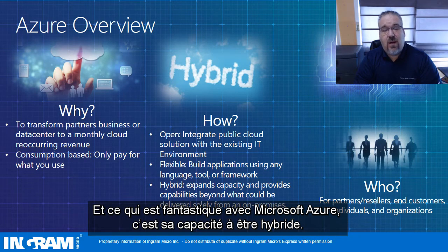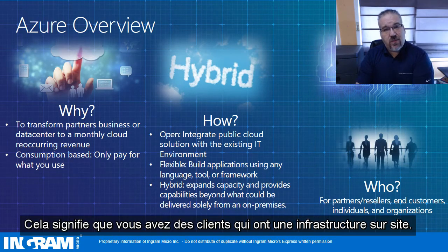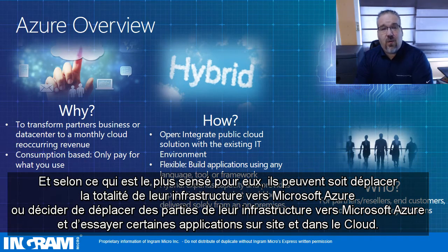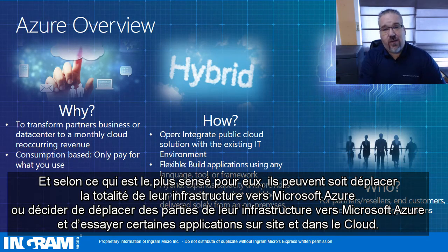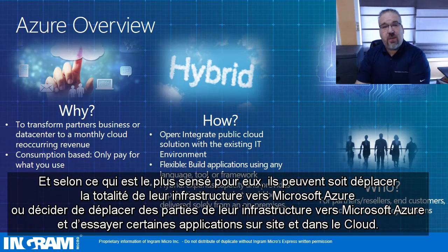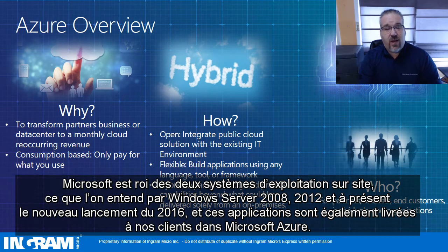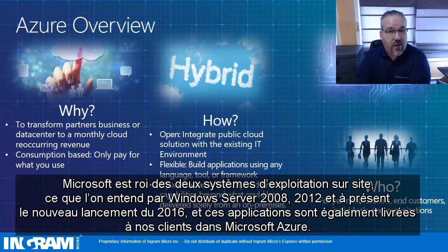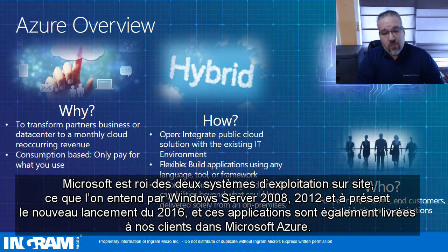The fantastic thing about Microsoft Azure is its ability to be hybrid. What that means is you have customers that have on-premises infrastructure and, depending on what makes most sense to them, they can either move their entire infrastructure into Microsoft Azure, or they can decide to move pieces of their infrastructure into Azure and have applications that are both on-premises and residing in the cloud. Microsoft is king at both on-premises operating systems — Windows Server 2008, 2012, and the new launch of 2016 — and those applications are also delivered in Microsoft Azure.